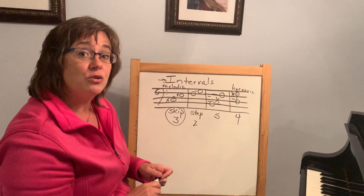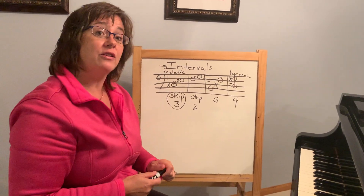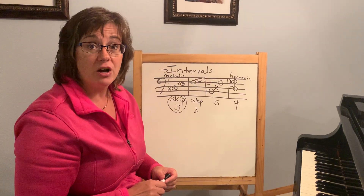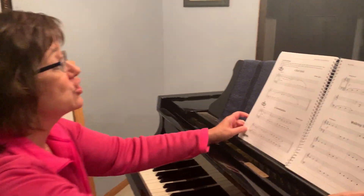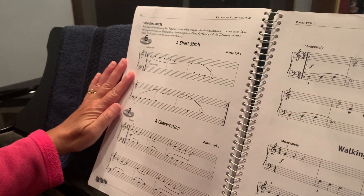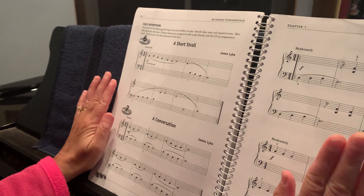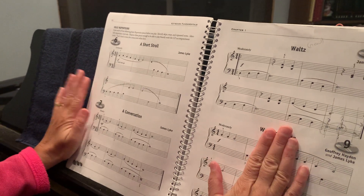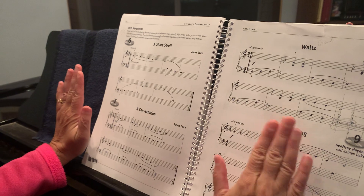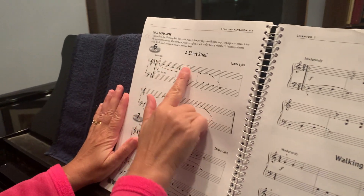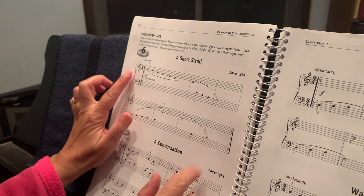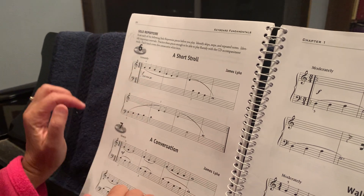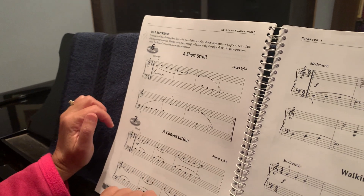As you continue to practice reading, this will be another way we're watching for movement to help us with our hand. Your pieces for this week start on page 20. 'A Short Stroll' — nothing unusual there. I encourage you to clap the rhythm through first with the appropriate hand. Notice we've got slurs telling us to play smooth, repeat signs, and dynamics — we're going to continue to work on getting loud and soft sounds and differences.